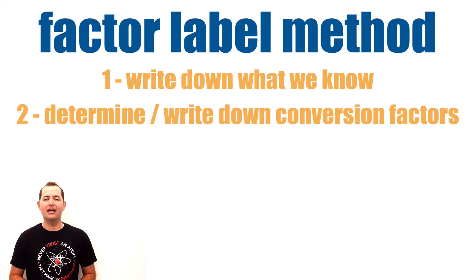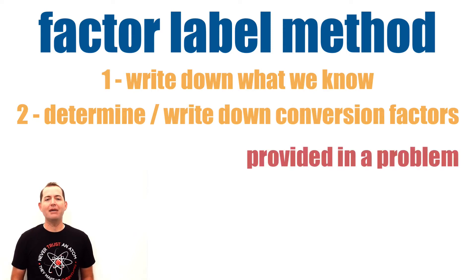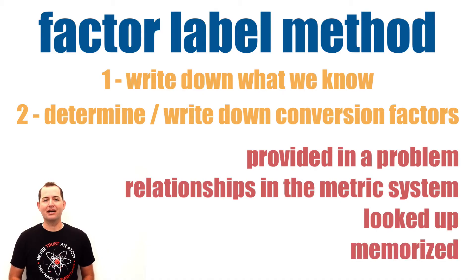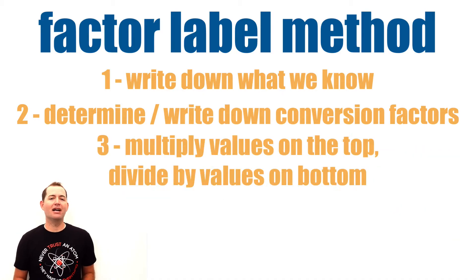Second, we need to determine and write down our conversion factors. Conversion factors or conversion ratios can come from multiple sources. They may be provided in a problem that we're trying to solve, they may be from relationships in the metric system, they can be looked up, or some of them may be memorized. Finally, we will multiply all values across the top and divide by each of the values on the bottom.